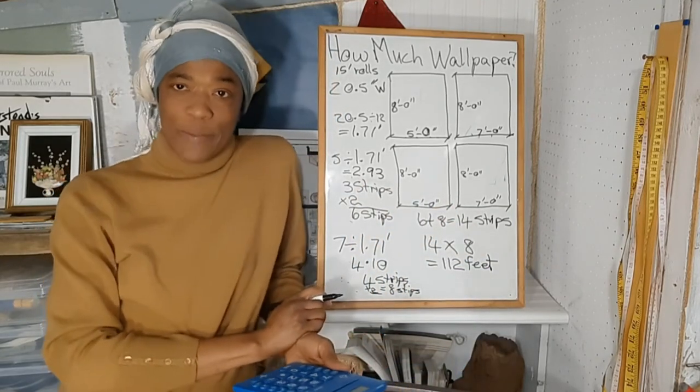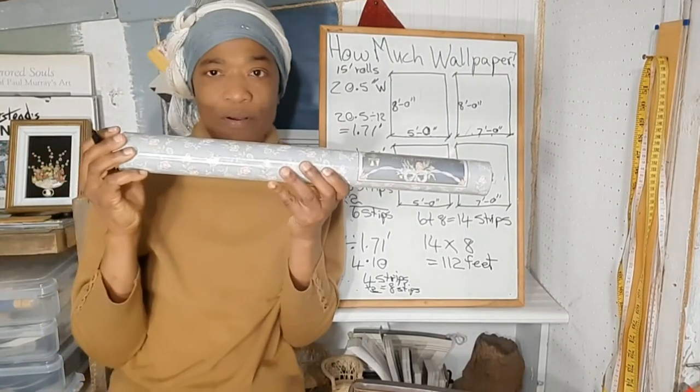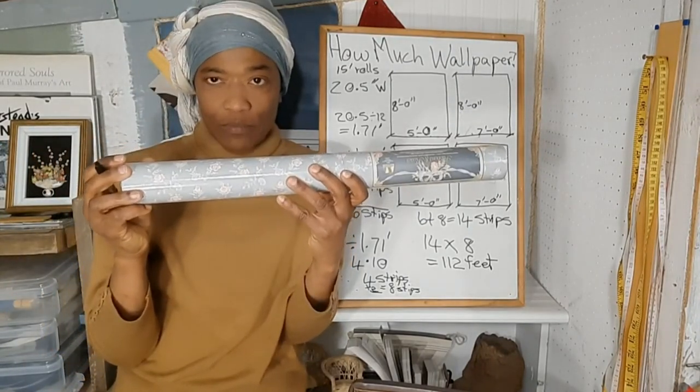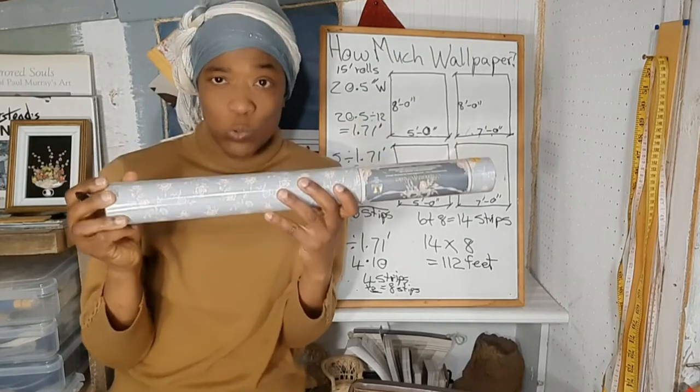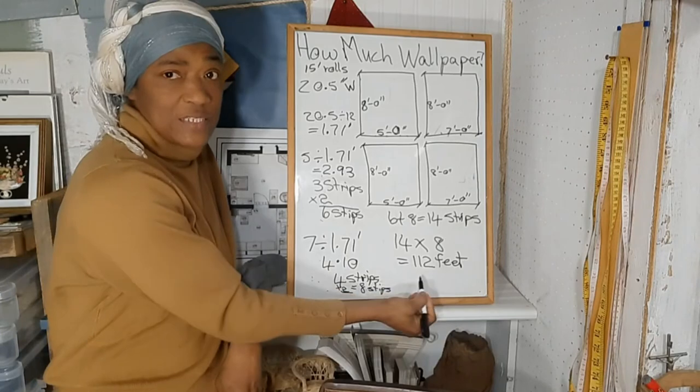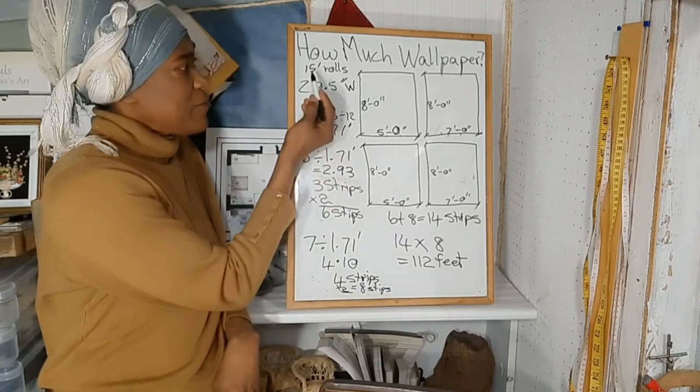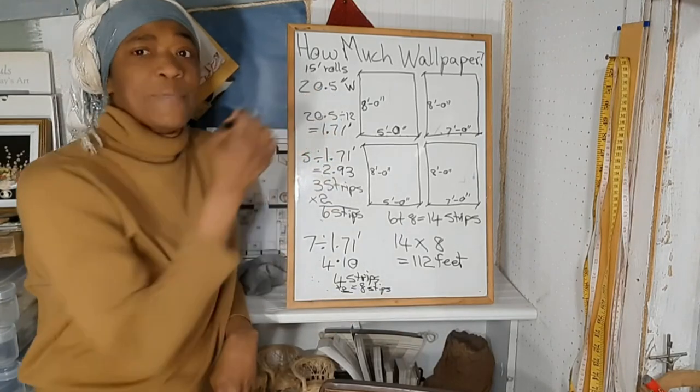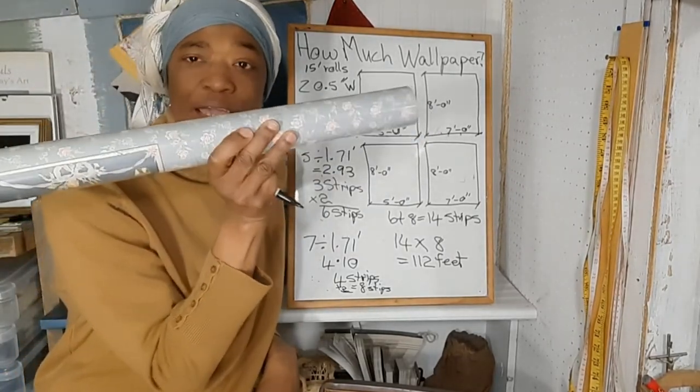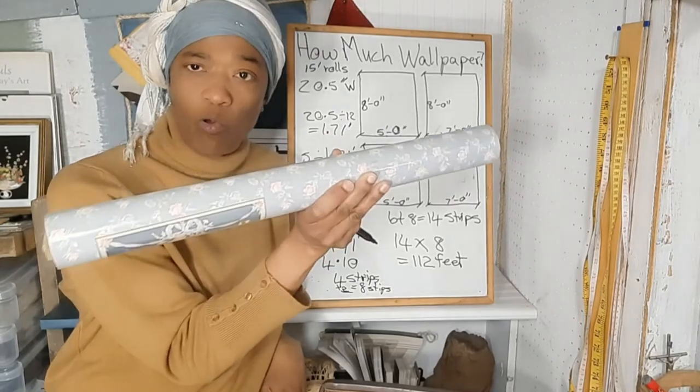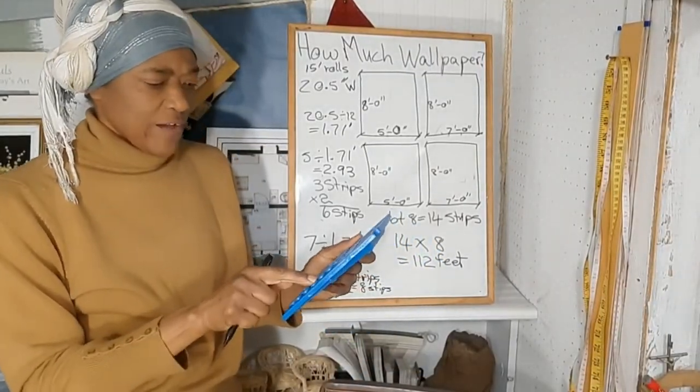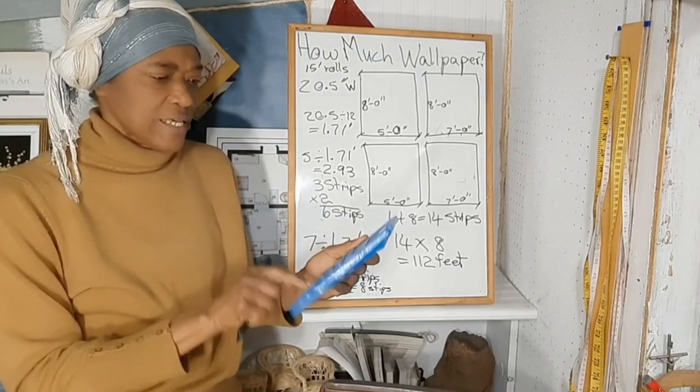But wallpaper is sold in rolls, so what do we do next? We take the 112 feet here and we divide by 15, because there are 15 feet of wallpaper in one roll. So 112 divided by 15 equals 7.47 rolls.